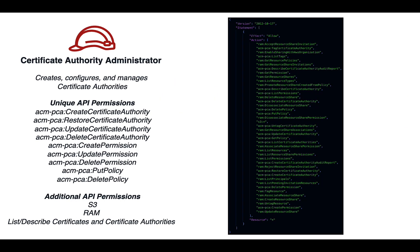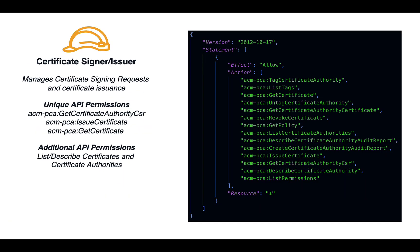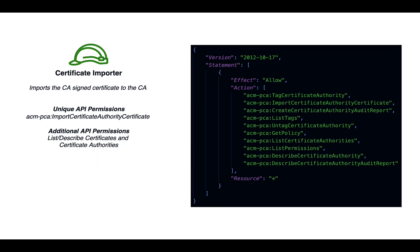Let's take a closer look at the permissions required for each role. Here's an example of what the IAM policy document looks like that is used with the Certificate Authority Administrator role. Let's look at the Certificate Signer and Issuer IAM policy. Lastly, let's look at the Certificate Importer IAM policy.